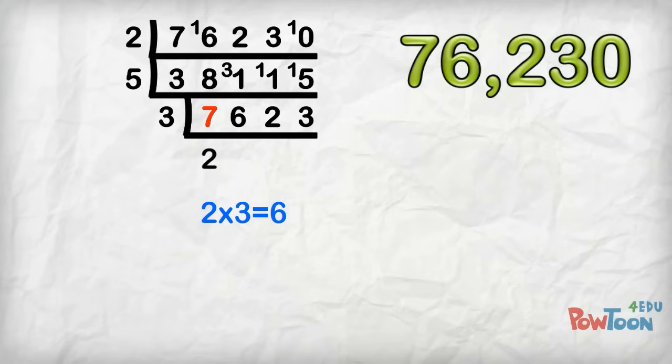3's into 7, 2. 3's are 6, remainder 1. 3's into 16, 5. 3's are 15, remainder 1. 3's into 12, 4. 3's are 12. 3's into 3, 1.